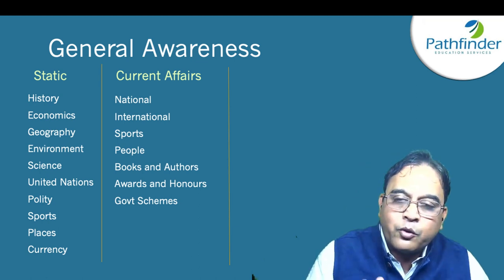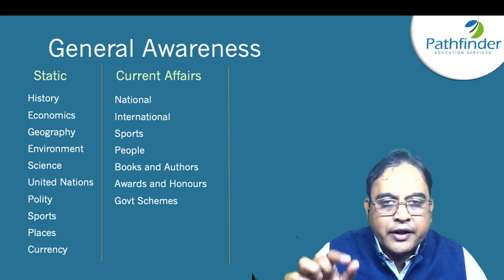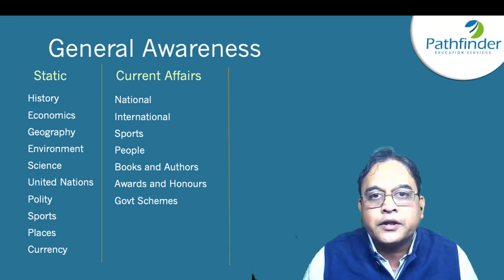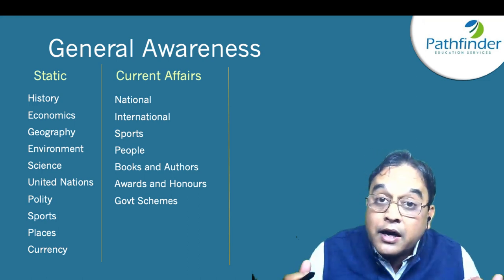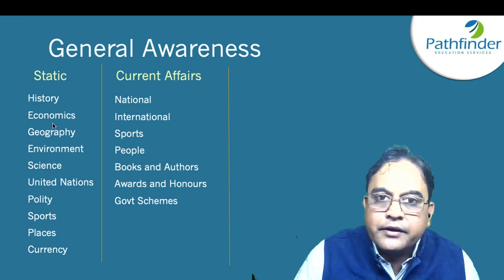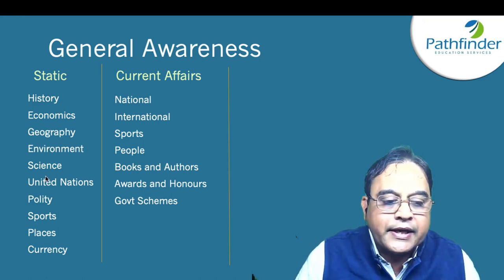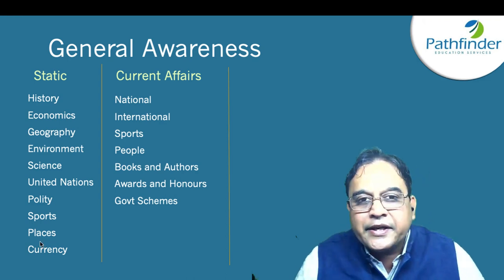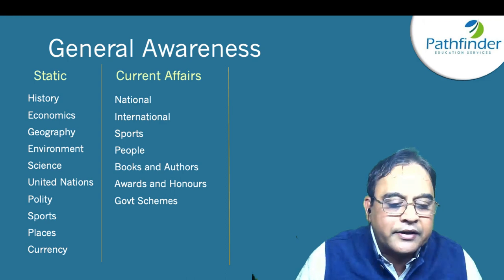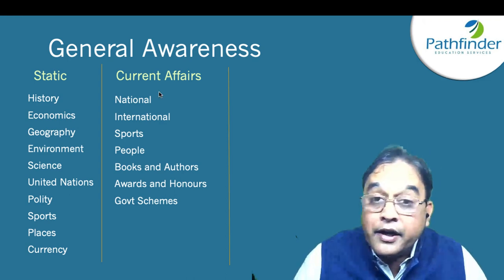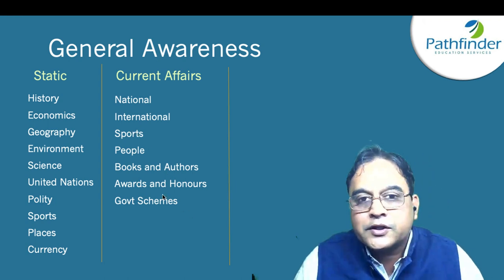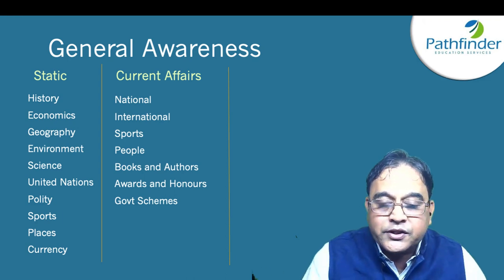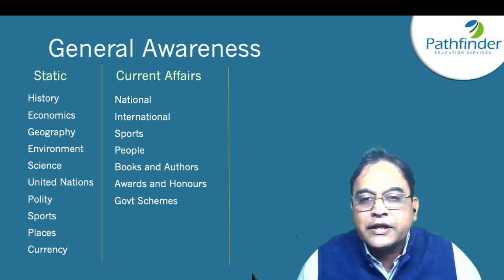You have to do well in General Awareness to qualify TISnet. The questions are not very in-depth — they are generally superficial — but the breadth of topics is amazing; they leave nothing out. From static GK to current affairs: static GK covers history, economics, geography, environment, science, United Nations, sports, places (capital cities, which city is on which river), country and currency. Current affairs cover national and international events, sports, people, books and authors, awards and honors, government schemes. All 40 questions represent every topic area.